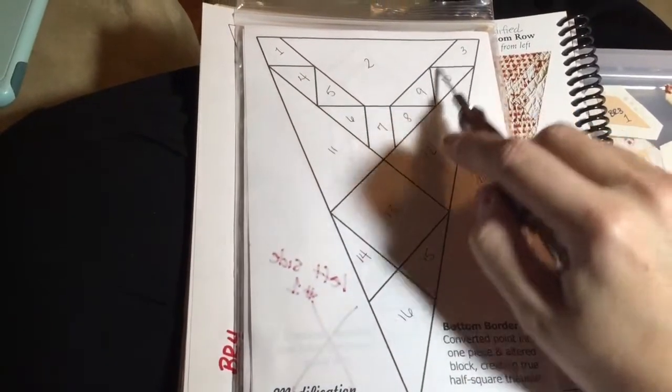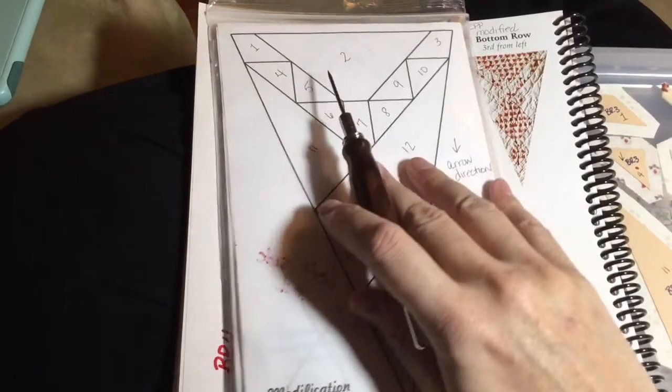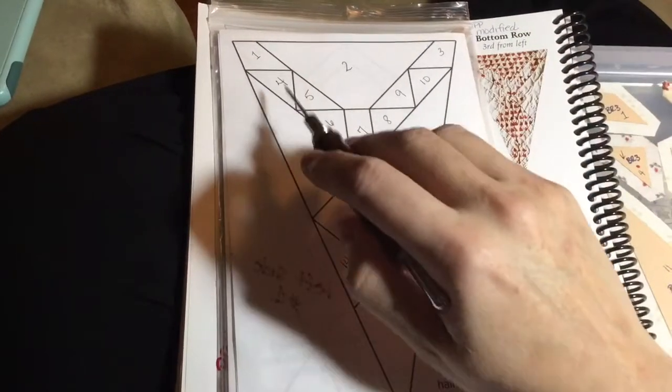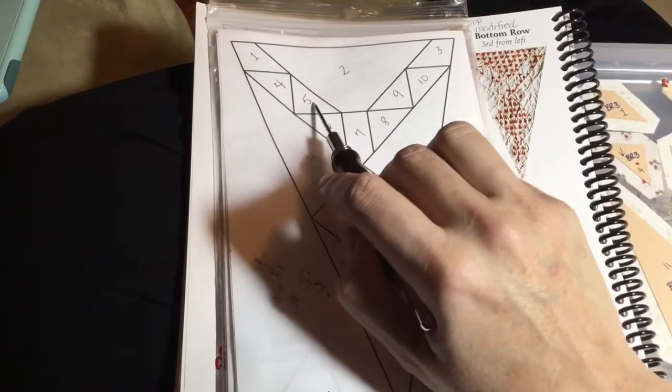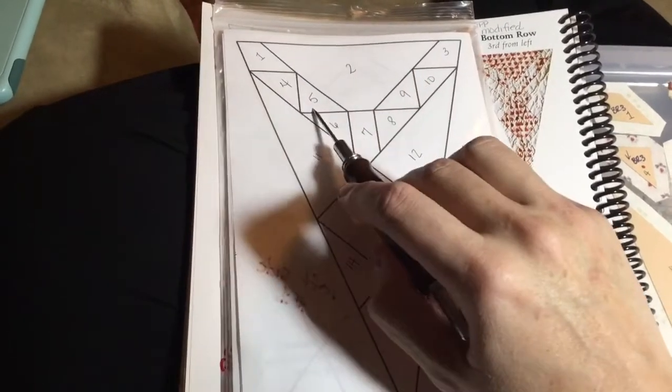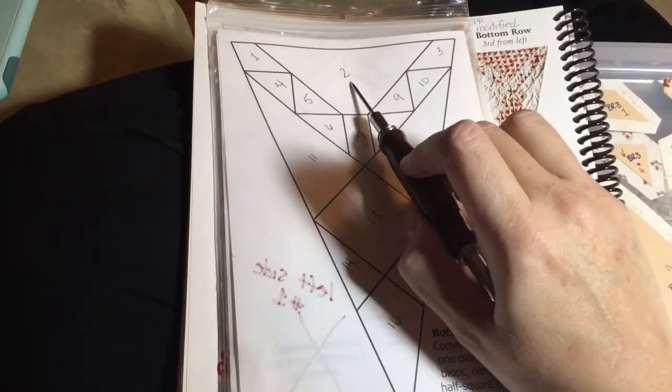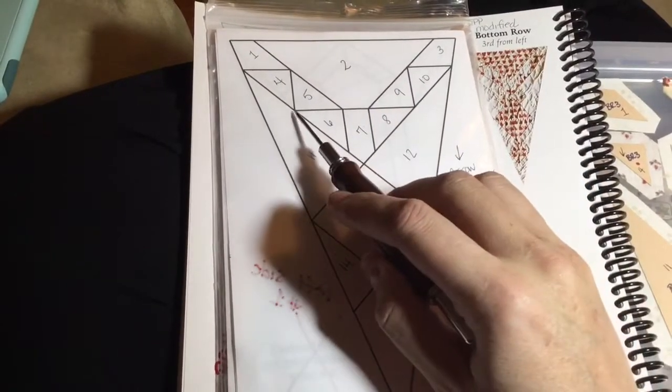So I'm going to start down here and assemble this whole section before I go on to this. These three pieces will form a unit, and these three pieces will form a unit attached to number two, and then six, seven, and eight,